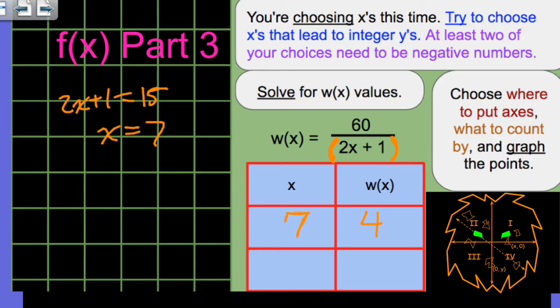If X is 7, then W, or the thing that we're going to call Y, if X is 7, then Y is going to equal 4. So I have a 0.74. That's the idea.